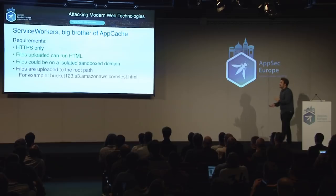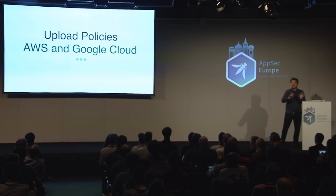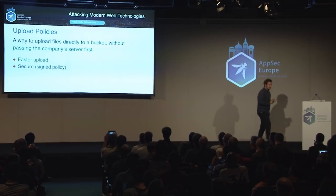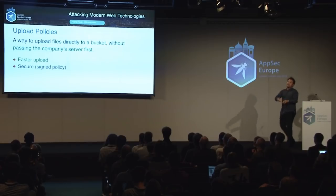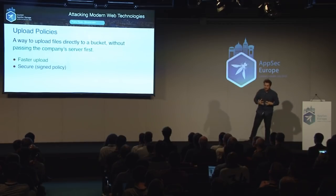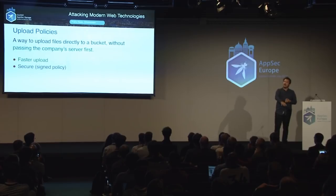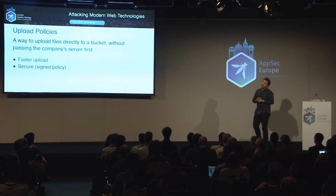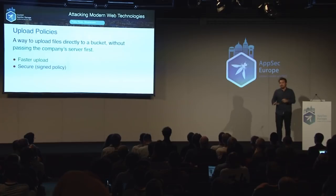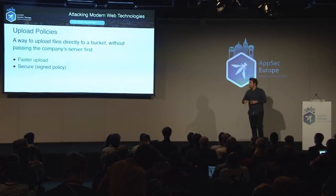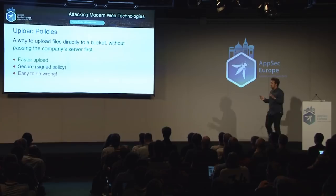Moving on to upload policies — the only thing in my talk description, though not the main focus. The way to upload files using S3 and Google Cloud before was: you took the binary or image and uploaded it to S3 through your server. They realized: why not have the client upload directly to S3? So they created a policy system — you upload a policy together with a signature and the file. If the file follows the policy, you can upload it. Pretty smart, but the problem is it's super easy to do wrong.